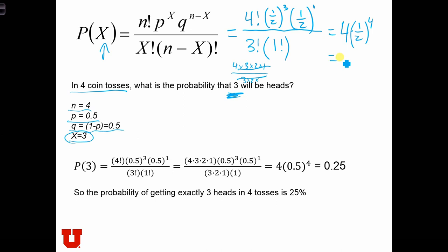So this is just equal to 4 times 1 over 2 to the 4, which is 1/16, which equals 1/4. So the probability that we will get exactly 3 heads when we flip a coin 4 times is 25%.